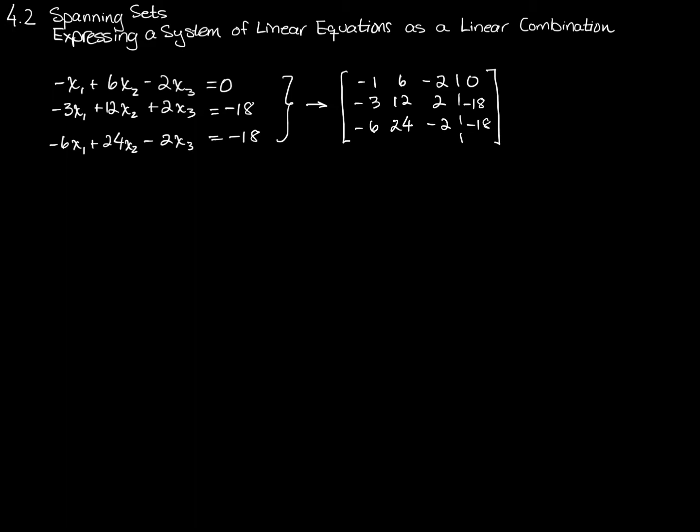And one of the ways we handled this in the past, in fact, this was in section 2.3, which was called representing a system of linear equations as a matrix equation, so we're going to establish a matrix equation here. And essentially what that means is that the first thing we're going to do is copy the left-hand side into its own matrix, and then we will copy the column matrix containing the constants, 0, negative 18, negative 18, to its own matrix. It's a column matrix.